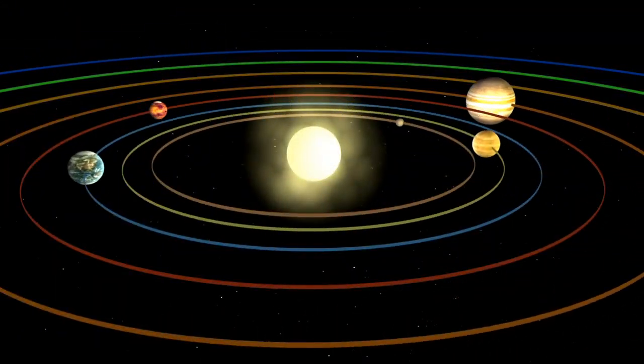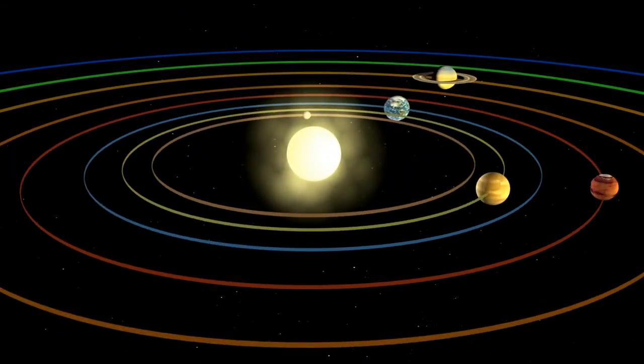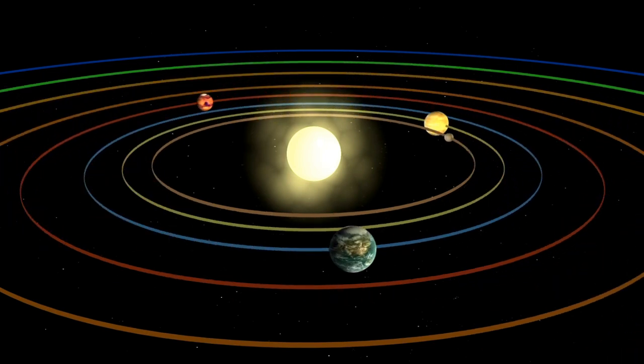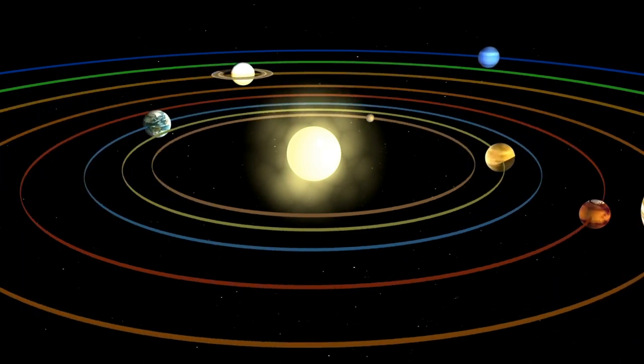This is our solar system. We have learned since childhood that the planets go around the sun in a circular motion, and our sun is fixed and does not move.